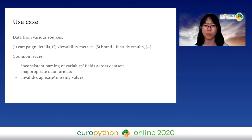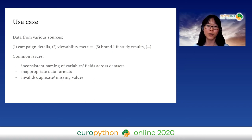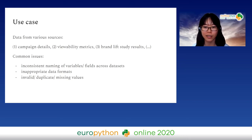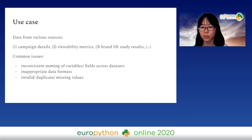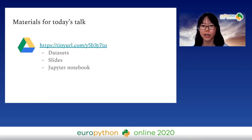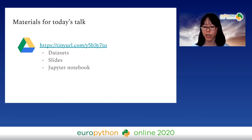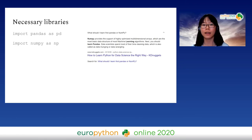With data from so many different sources, there will be common issues — like inconsistent naming of variables or fields across datasets. They may refer to the same thing but be termed differently in different datasets, or there can be inappropriate data formats, invalid values, duplicates, or missing values. The materials for today's talk can be found on a Google Drive link I'll share.